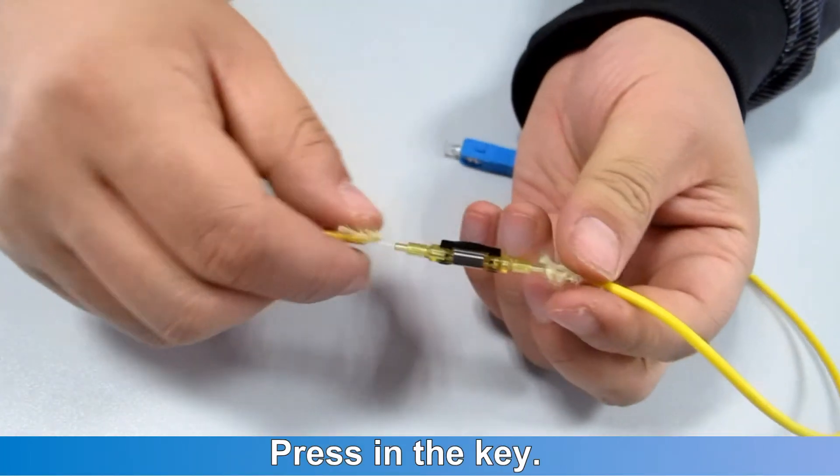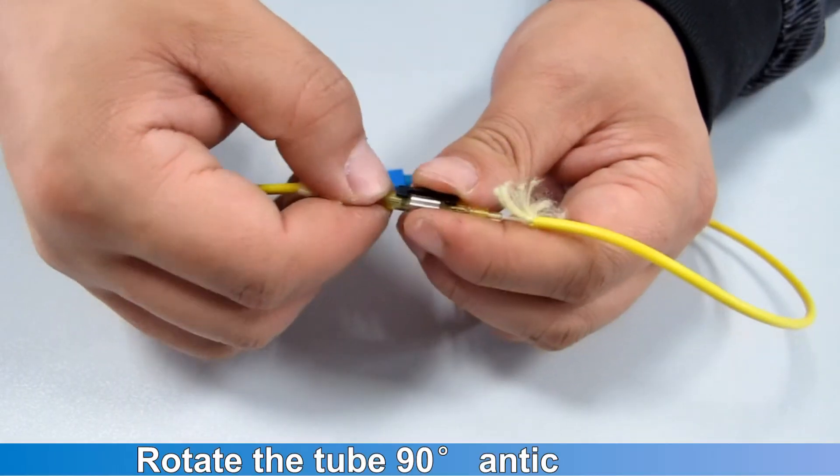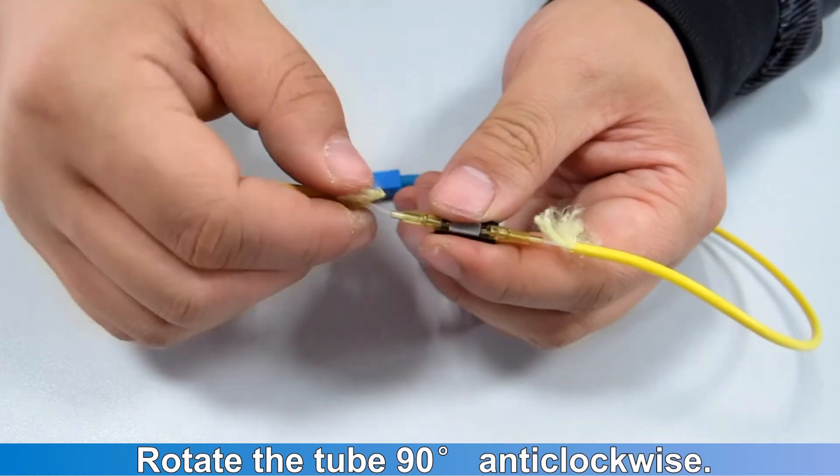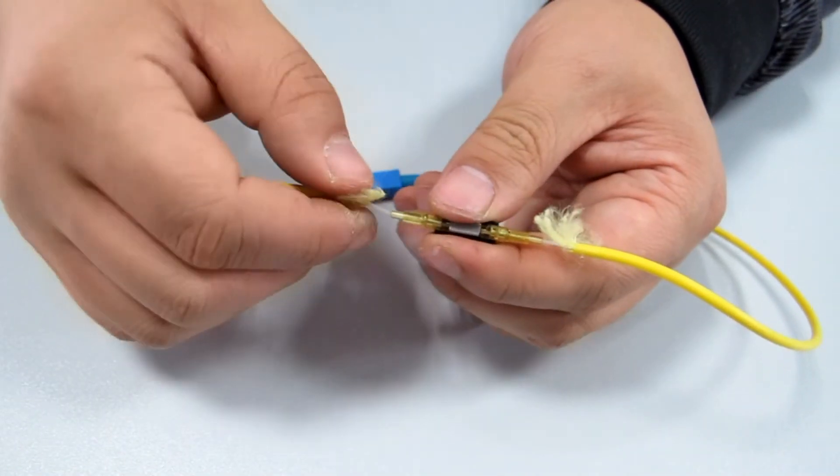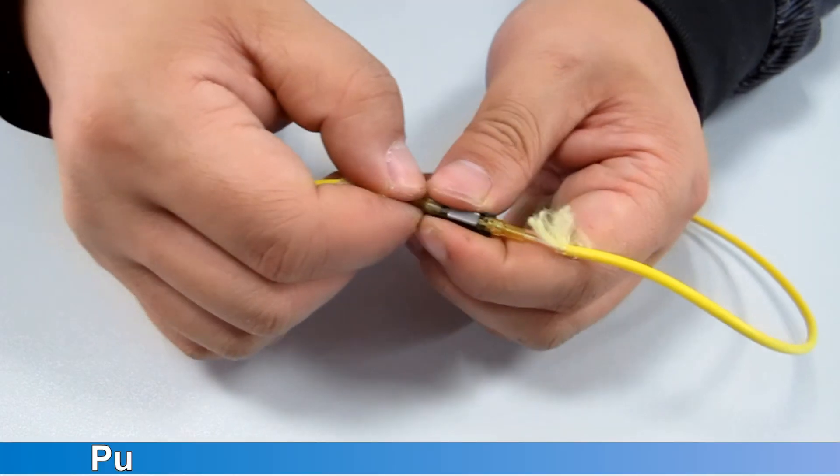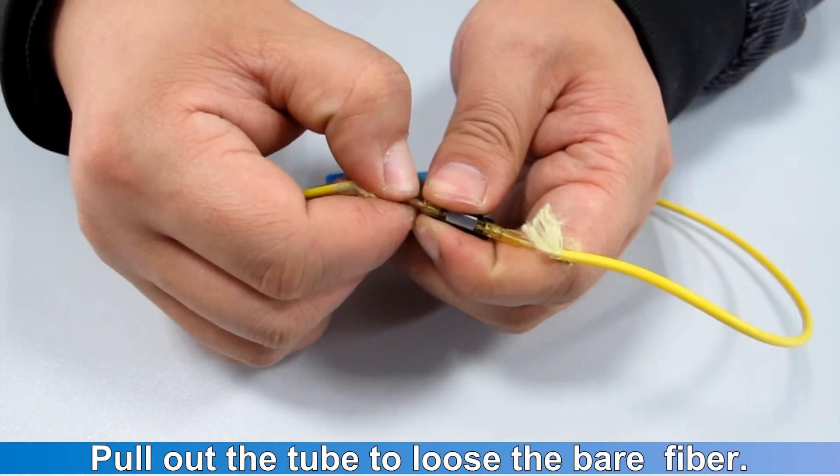Press in the key. Rotate the tube 90 degrees anti-clockwise. Pull out the tube to loosen the bare fiber.